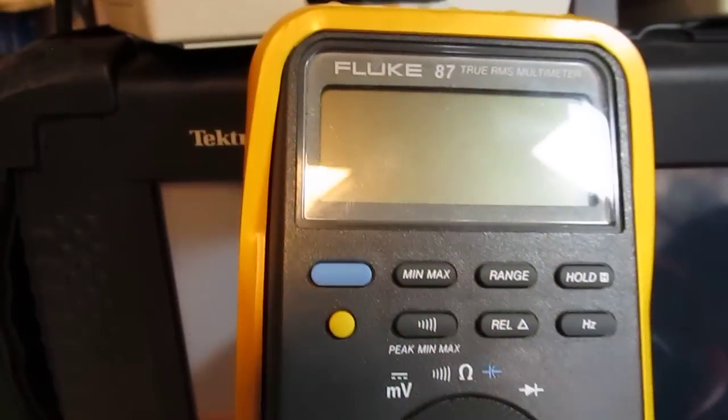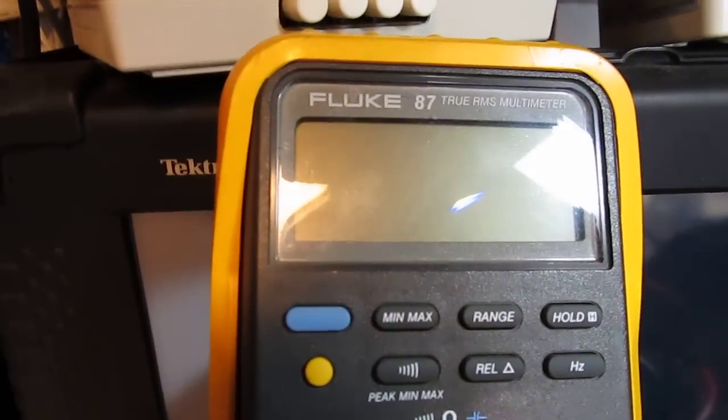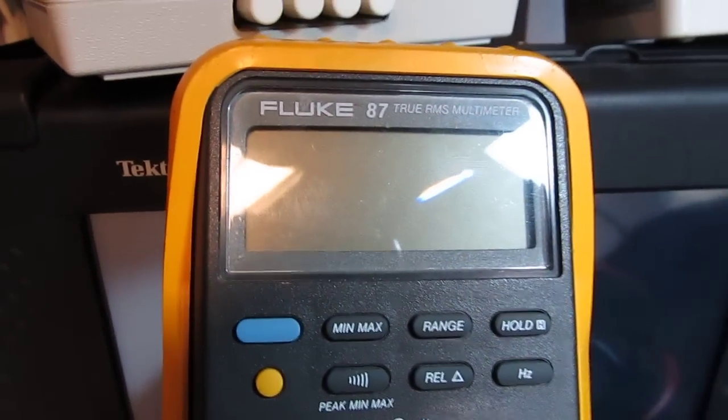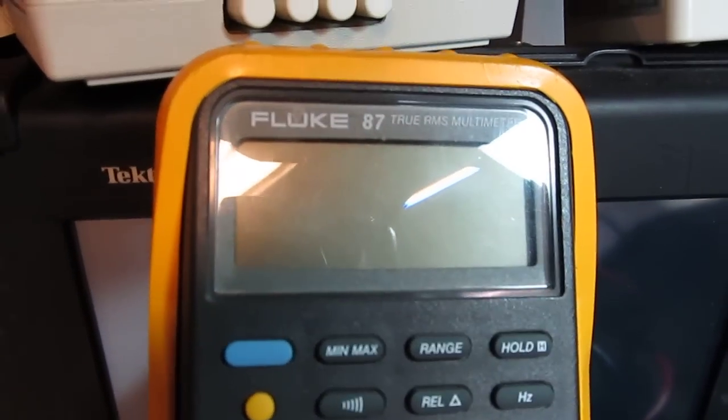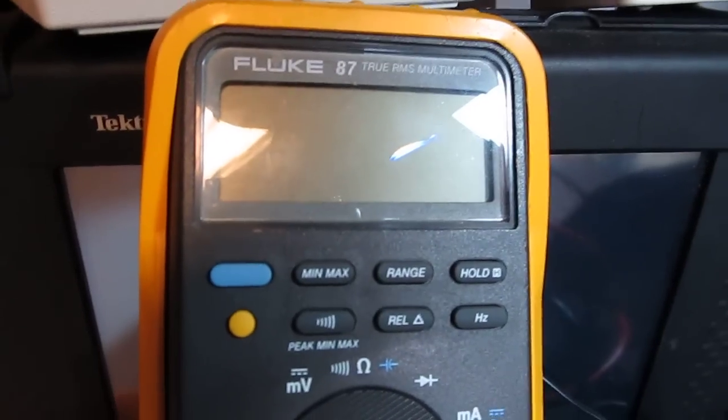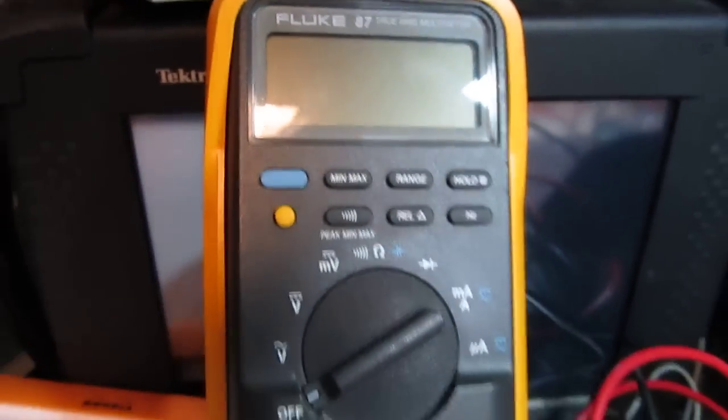Fluke 87 is one of the original models. Still works great. I think I replaced the little zebra strip on the LCD display, which is what typically goes bad with these older ones. You can get a little kit to replace that zebra strip and it comes back good as new.